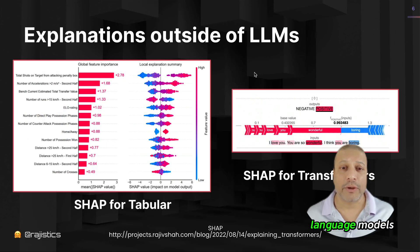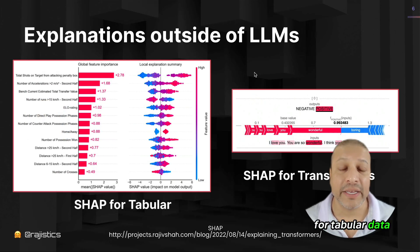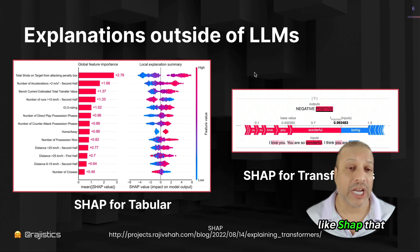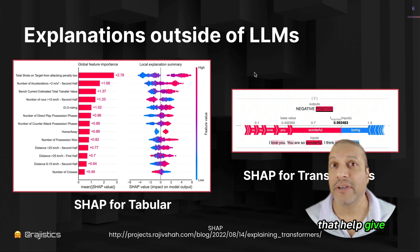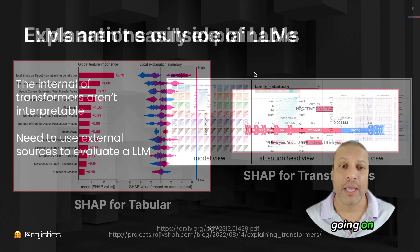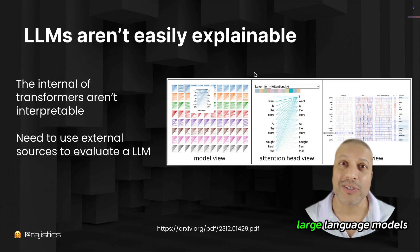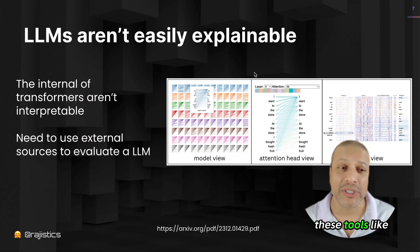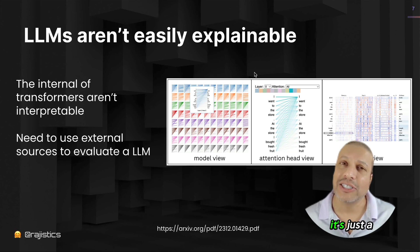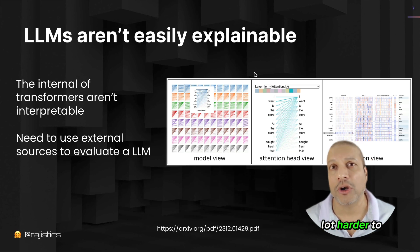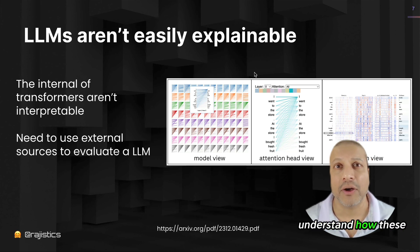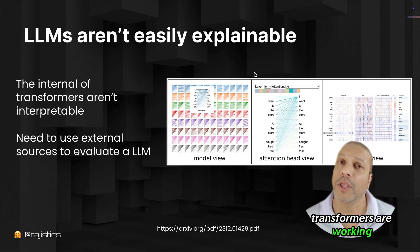Outside of large language models — for example, for tabular data — we have techniques like SHAP that help give us explanations of the predictions that are going on. When we move over to large language models, we don't have tools like SHAP. It's just a lot harder to understand how these transformers are working.